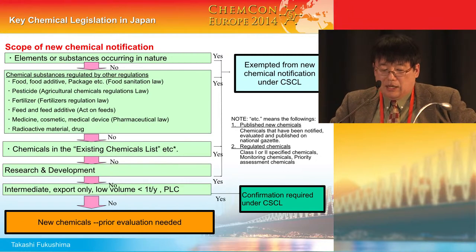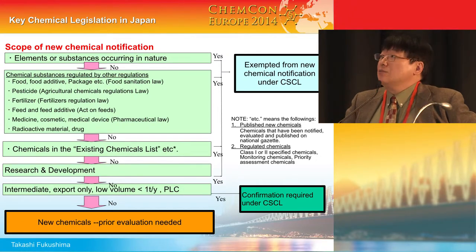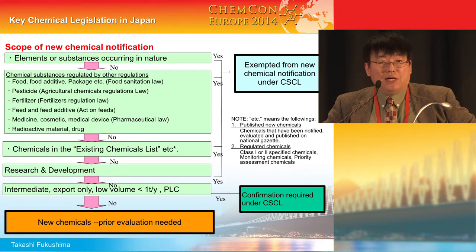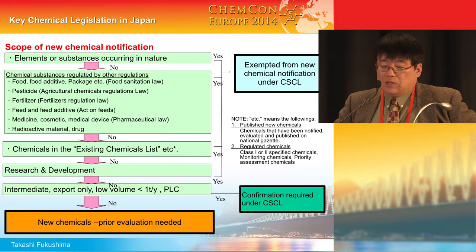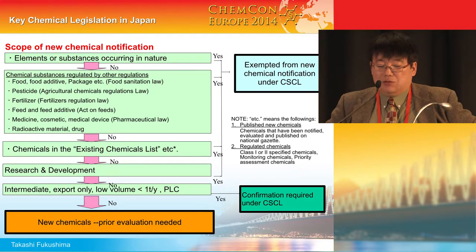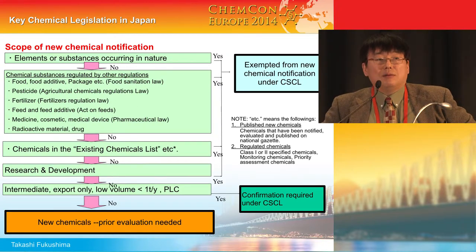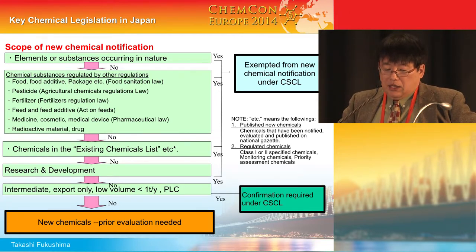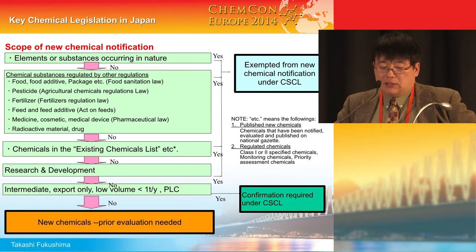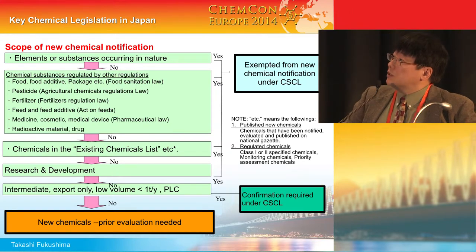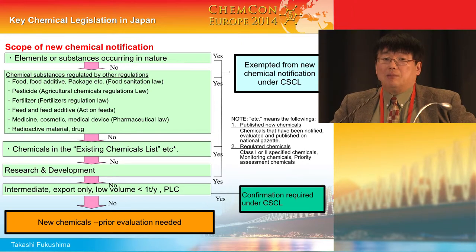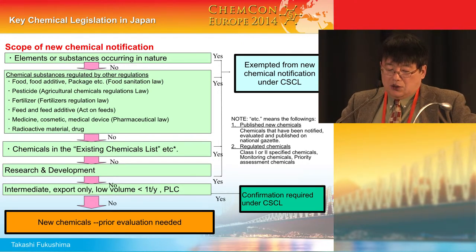Now let me talk about the new chemical notification. This is a flowchart scheme for determining whether your chemicals have to be notified to the authority or not. The Chemical Substance Control Law excludes elements or substances occurring in nature — one significant example is that CSCL does not cover asbestos. The second phase covers chemicals regulated by other specific regulations; if listed under those regulations, you don't need to apply to CSCL.